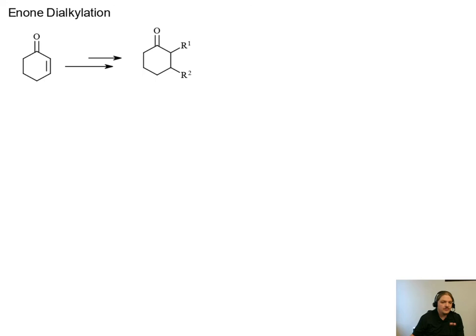The overall transformation is shown here at the top of the screen where we have an alpha beta unsaturated ketone. I'm going to use cyclohexan-2-en-1-one. We go through a sequence of reactions that leads to putting two alkyl groups, one at the alpha position and one at the beta position.